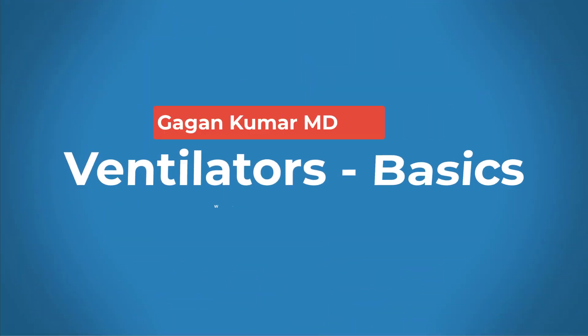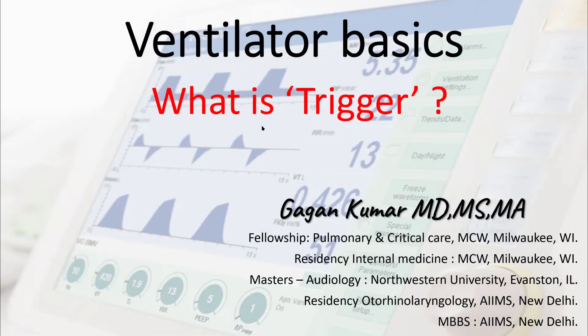Hello everyone. There are various different kinds of modes on a ventilator, like volume assist control, pressure assist control, pressure support, etc. These modes differ in the way they initiate, maintain, and terminate inspiration — in technical terms, how they trigger, what they target, and how they cycle. In this series of lectures, we'll discuss these characteristics and examine how these ventilator modes differ from each other. This will also pave a way towards understanding ventilator asynchronies, which we'll be talking about in upcoming lectures.